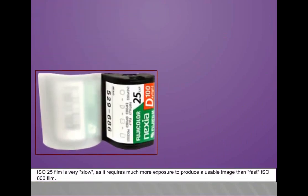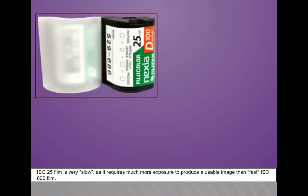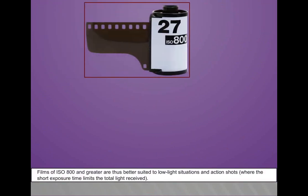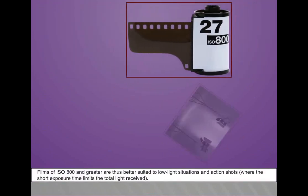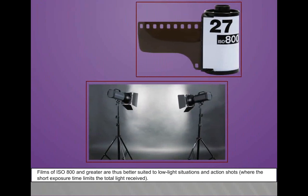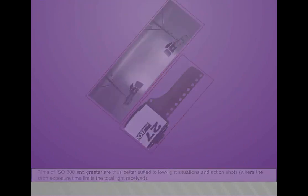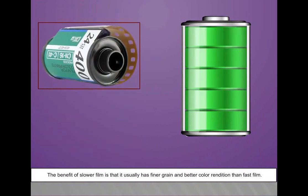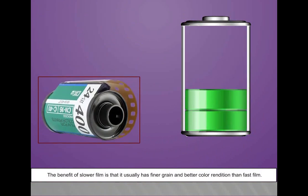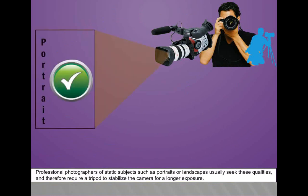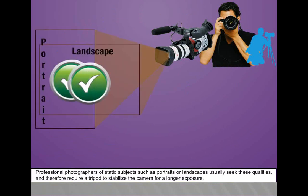ISO 25 film is very slow as it requires much more exposure to produce a usable image than fast ISO 800 film. Films of ISO 800 and greater are thus better suited to low-light situations and action shots where the short exposure time limits the total light received. The benefit of slower film is that it usually has finer grain and better color rendition than fast film. Professional photographers of static subjects such as portraits or landscapes usually seek these qualities and therefore require a tripod to stabilize the camera for a longer exposure.